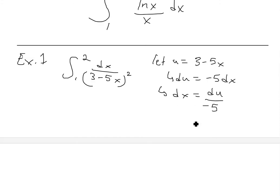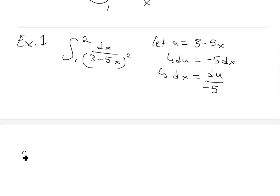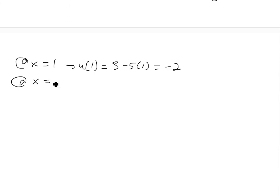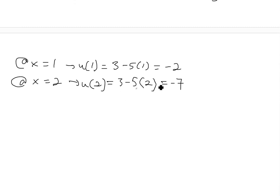Now let's find the new limits. At x equals one, u of one equals three minus five times one, which equals negative two. At x equals two, u of two equals three minus five times two, which is three minus ten, and that equals negative seven.